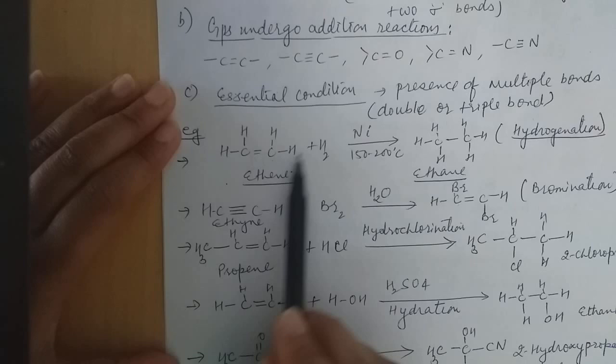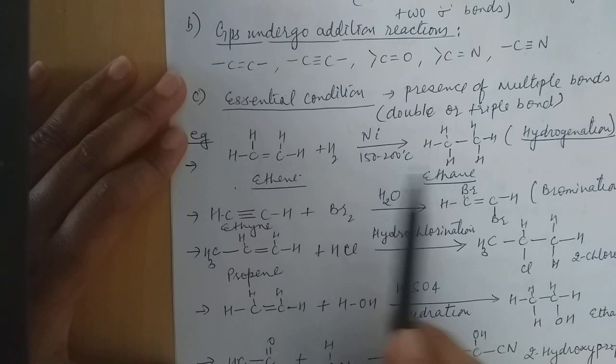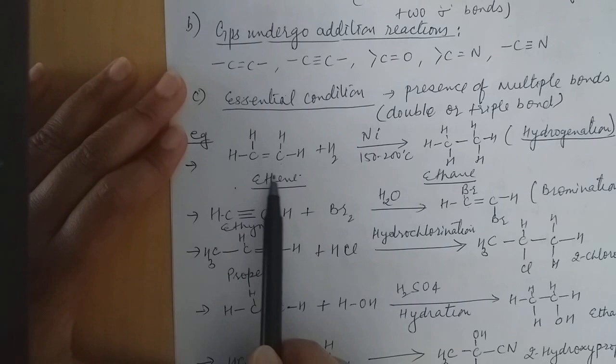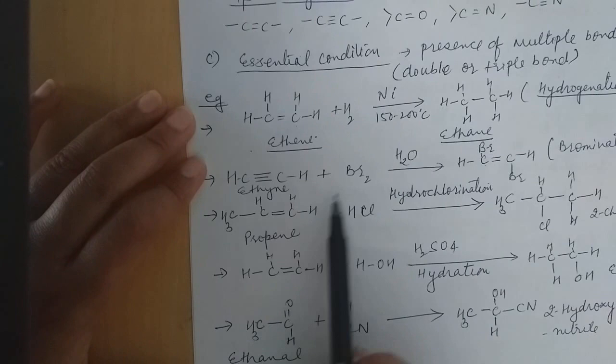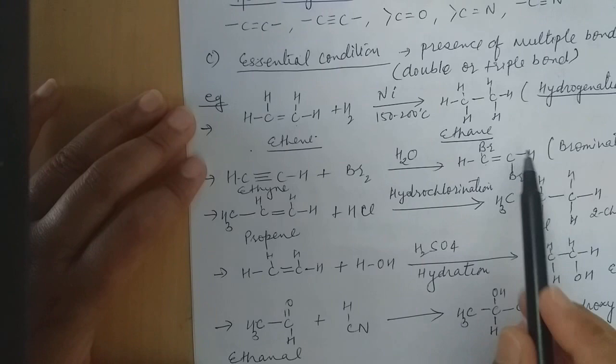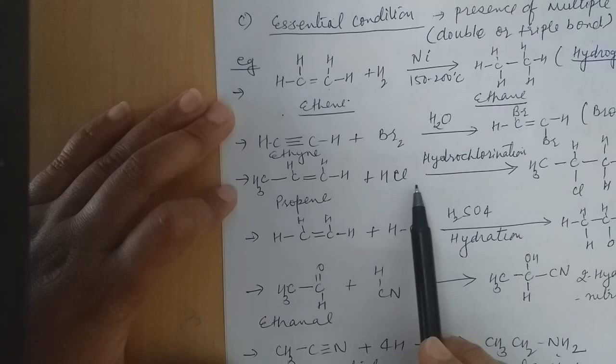Some reactions show addition reaction. First, we are doing hydrogenation — ethene in the presence of nickel at 150 to 200 degrees centigrade undergoes hydrogenation, meaning addition of hydrogen. The pi bond breaks and ethene becomes ethane. That is bromination — bromination is carried out in the presence of H2O, bromination of ethane. That is called bromination.